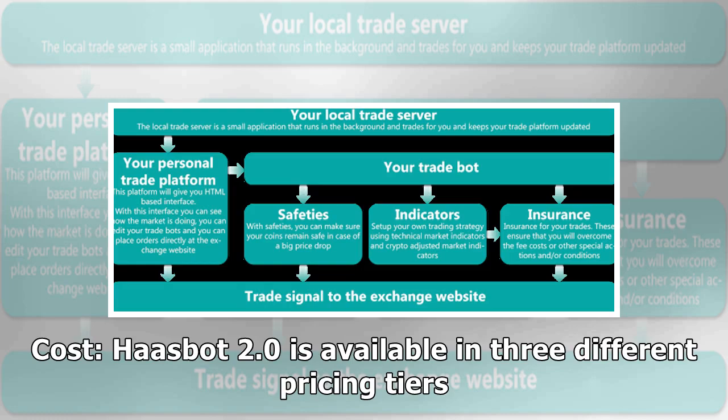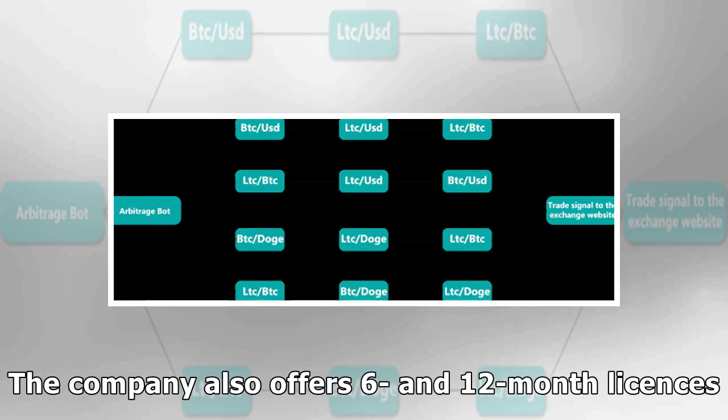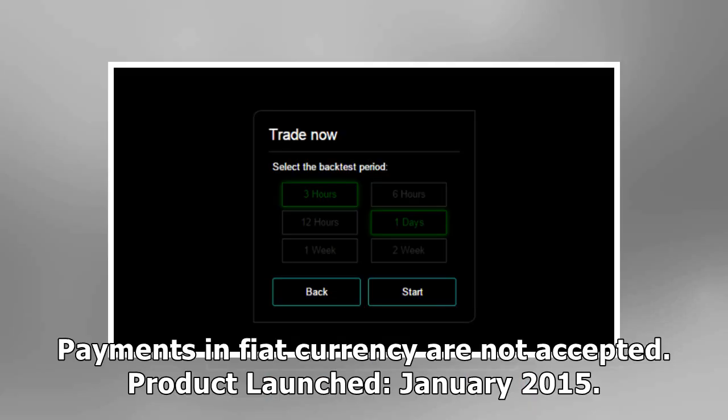Haasbot 2.0 is available in three different pricing tiers. Haas Online uses a subscription-based model. A three-month beginner license costs 0.22 BTC, the simple license is priced at 0.30 BTC, while the full advanced license costs 0.45 BTC. The company also offers six- and 12-month licenses. Payments in fiat currency are not accepted.